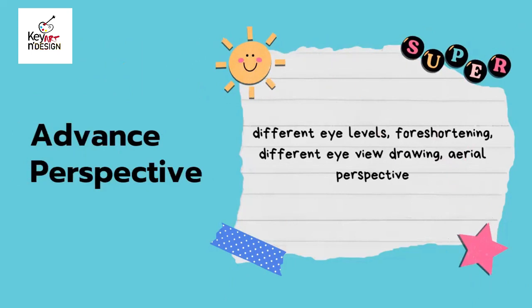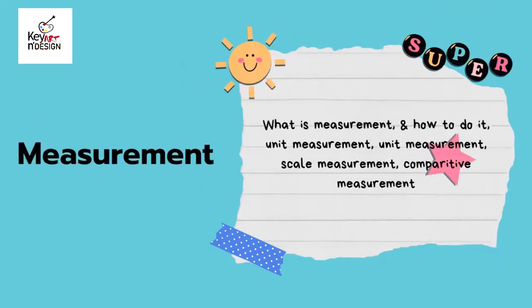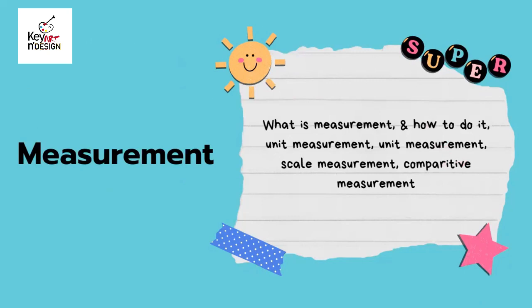Perspective fundamentals covers the concept of perspective, line convergence, square perspective, and different points of perspective. Advanced perspective covers different eye levels, foreshortening, different eye-view drawing, and aerial perspective.